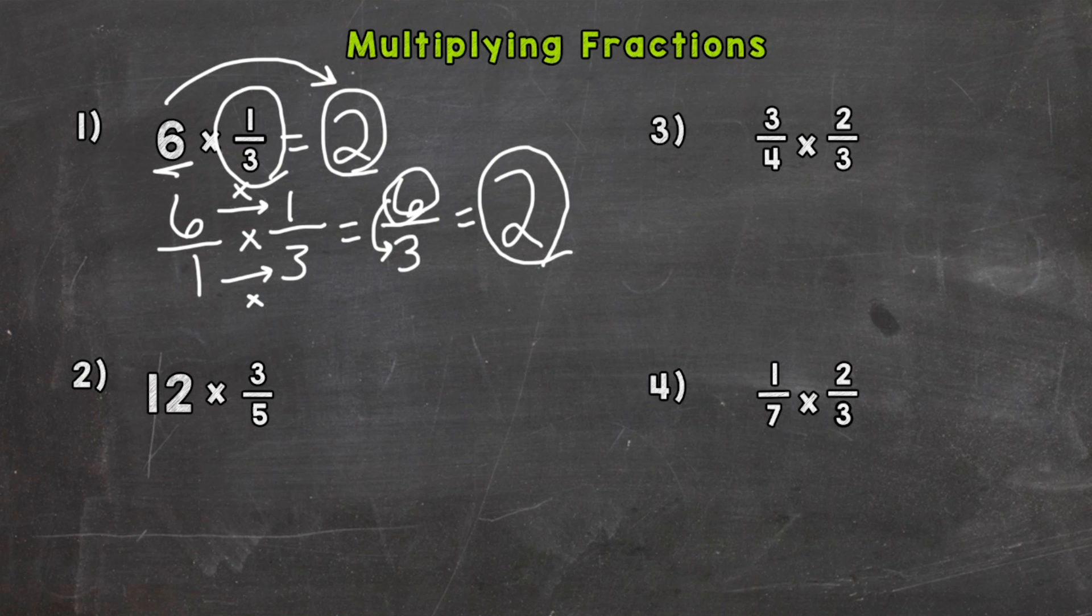So let's take a look at number two. We have twelve. So it's a whole number. Let's put it over one. And we multiply by three-fifths. So go straight across. Twelve times three, thirty-six. One times five is five. So thirty-six-fifths. So what we need to do now, that's our answer, but it's improper. So we need to divide the numerator by the denominator. So thirty-six divided by five.